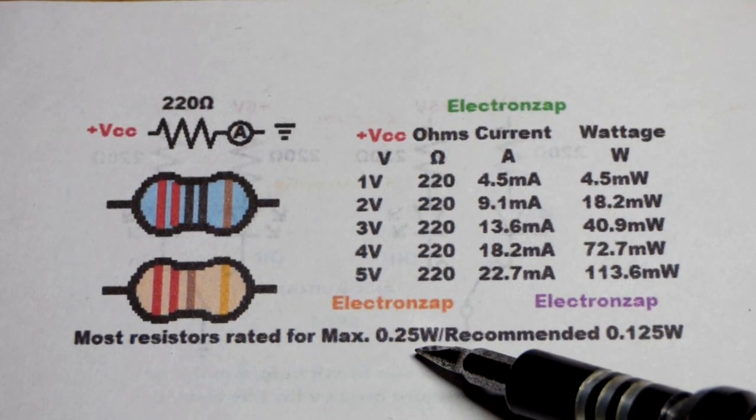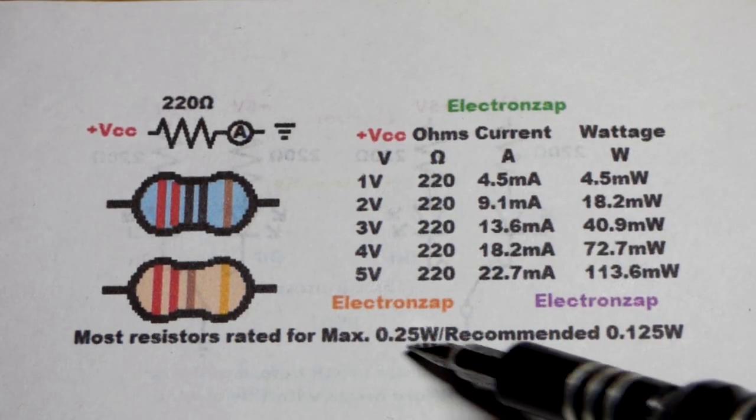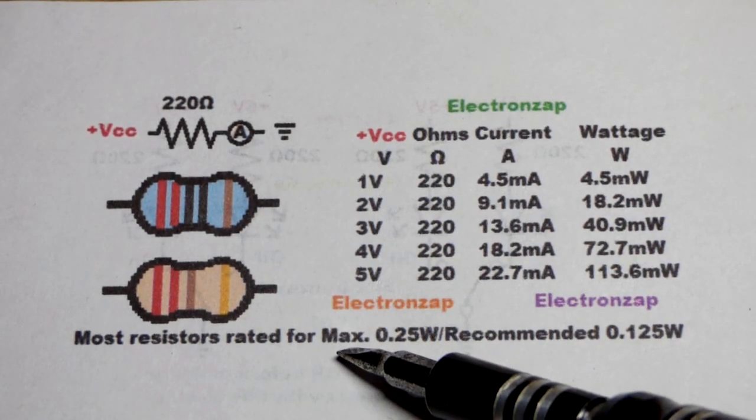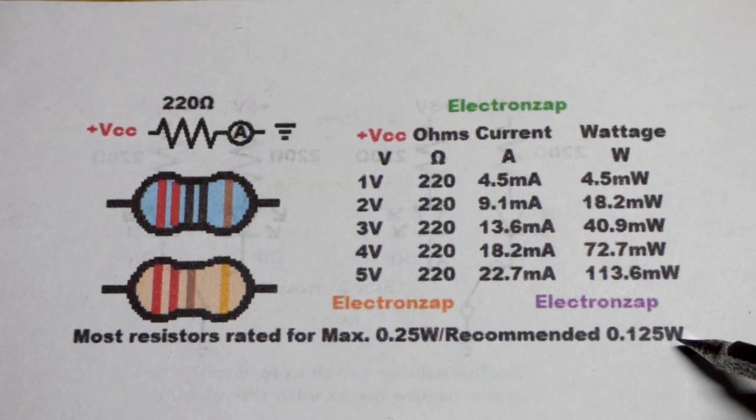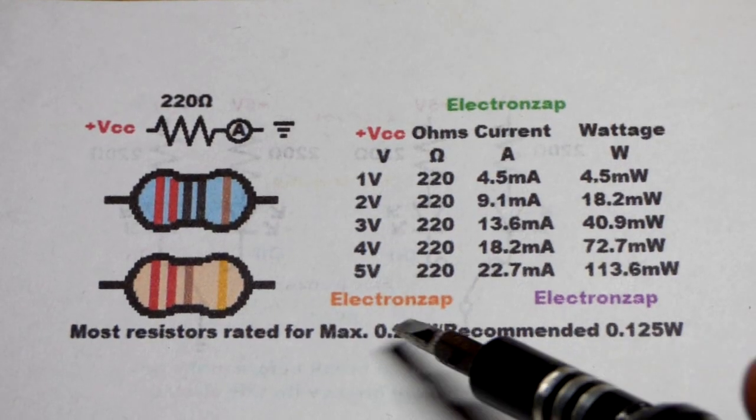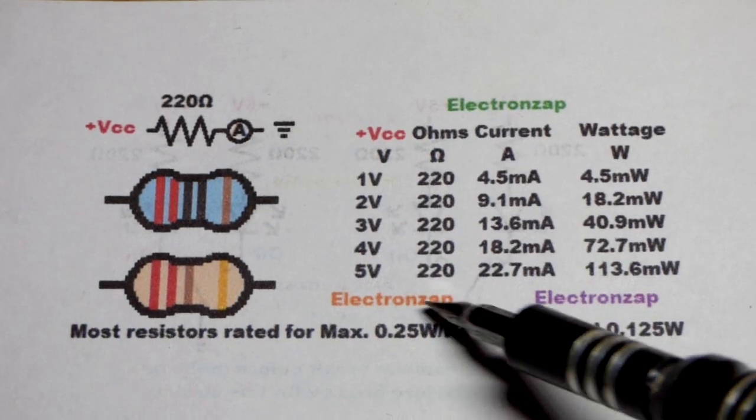So that's 0.25 watts, even though they're rated for 0.25 watts, that should be considered a maximum wattage. You should stay below 0.125 watts, about half of what it is. The lower the better.